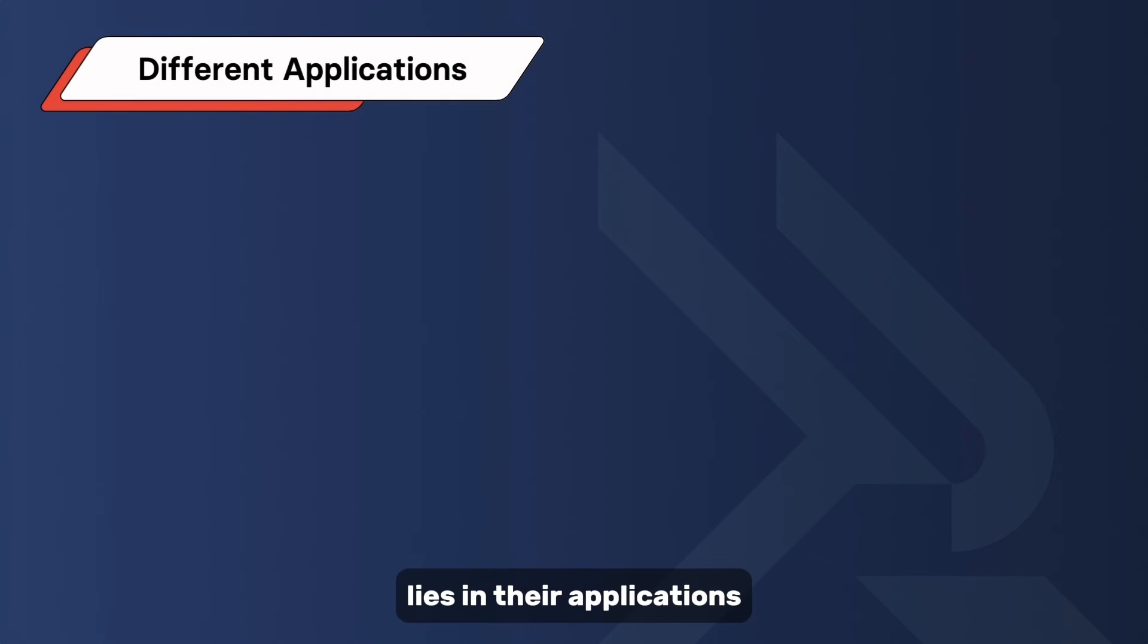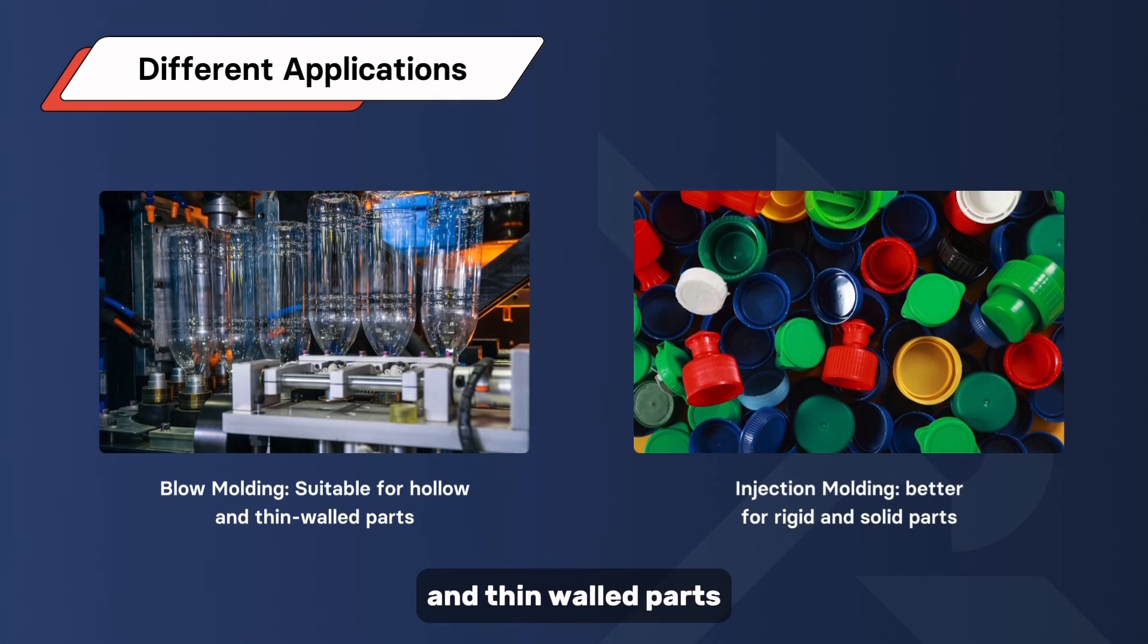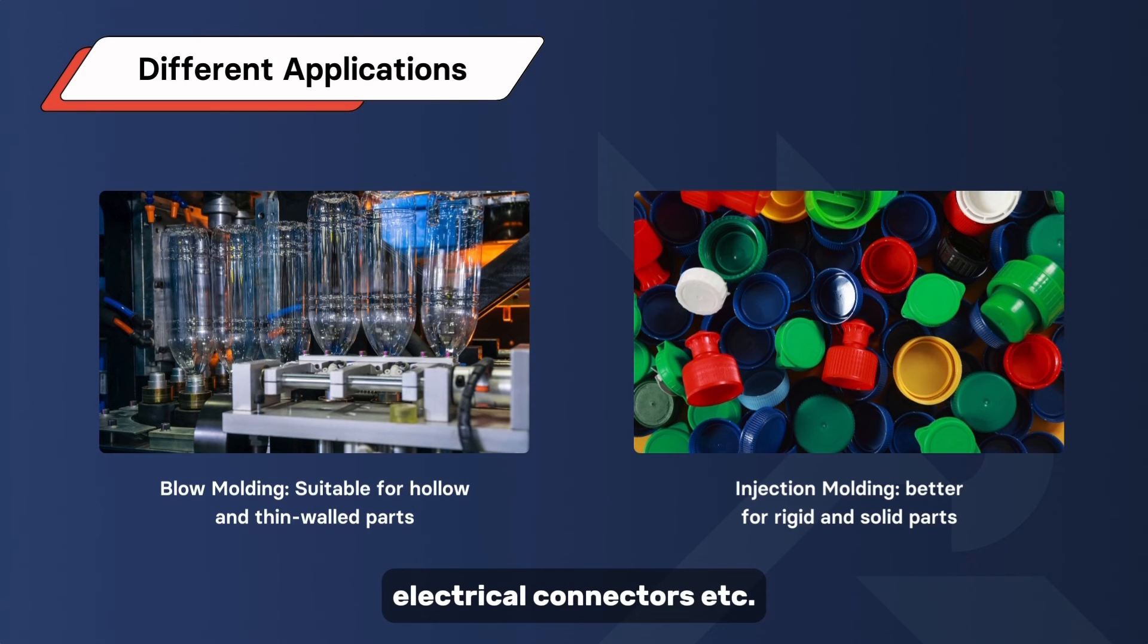Their most significant difference lies in their applications. Blow molding is suitable for hollow and thin-walled parts. However, injection molding is better for rigid and solid parts such as bottle caps, toys, electrical connectors, etc.